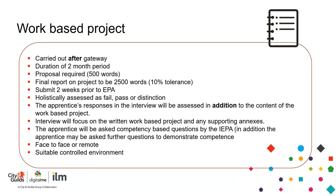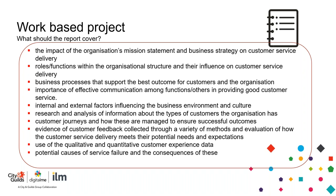Previously, the interview would have been done face to face, but during the current climate it is also offered remotely. The apprentice must not be disturbed — whether at college, the training provider's premises, or the employer's premises. COVID guidelines must be adhered to. The learner must write a report of 2,500 words with 10% tolerance. The areas the report must cover are detailed in the endpoint assessment pack on the City and Guilds website.